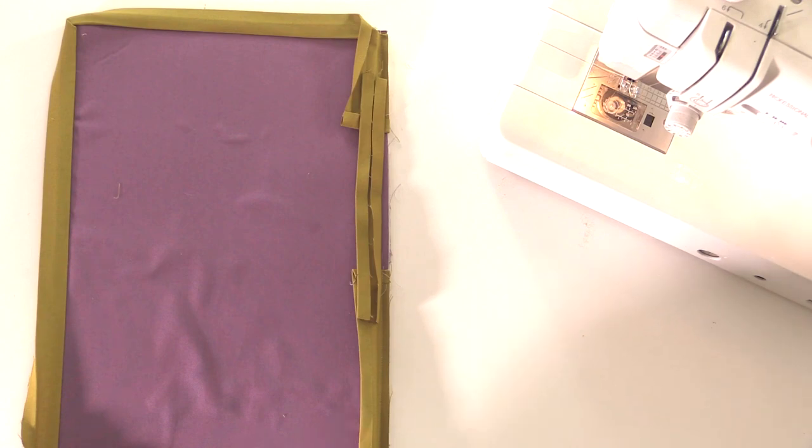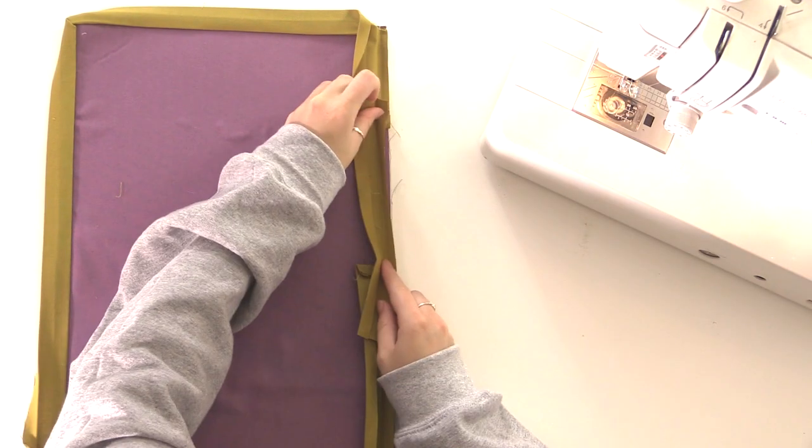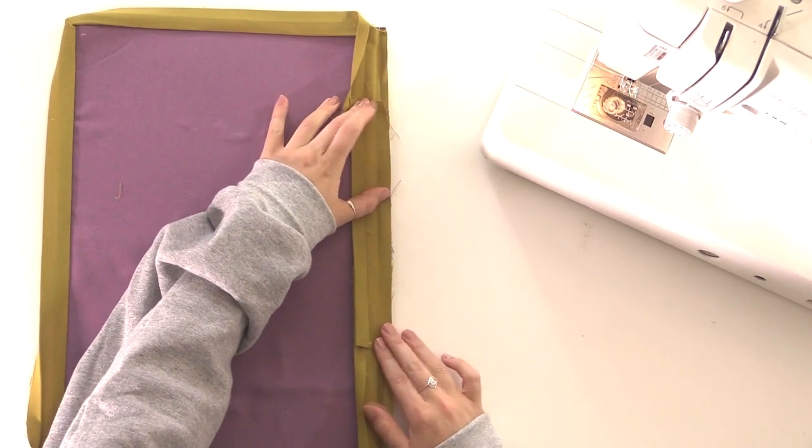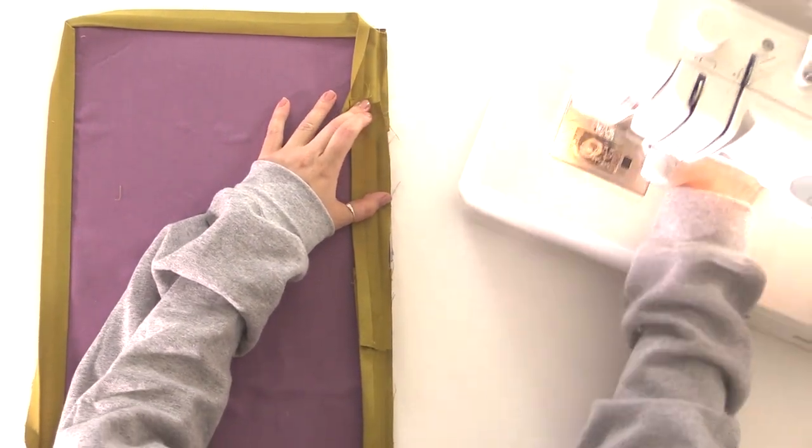So I'm just trimming this piece down. It's a bit longer than I need, but that's okay. And then I'm going to sew it as I was before, making sure it overlaps the two edges that I've left open.